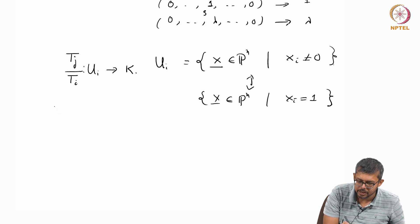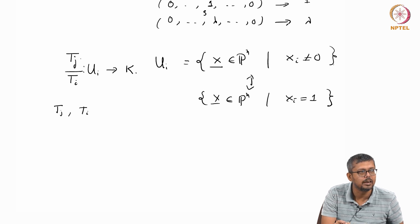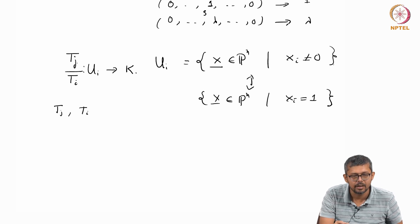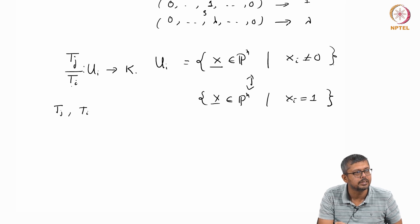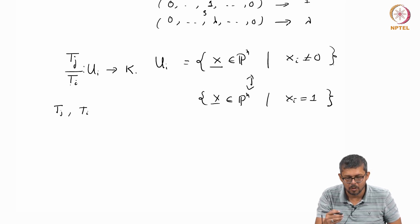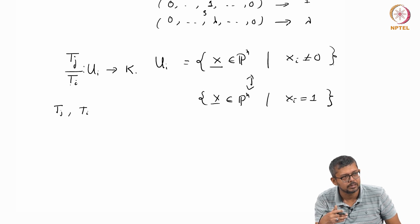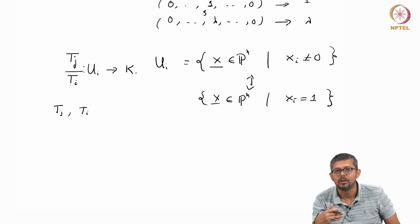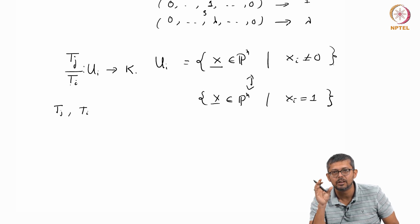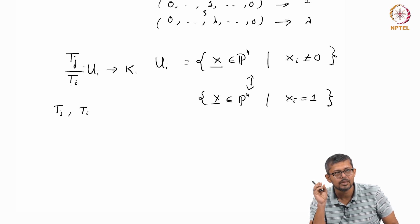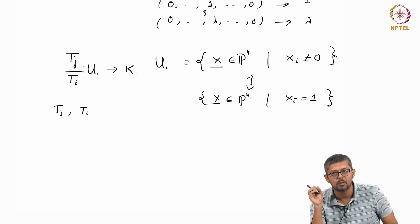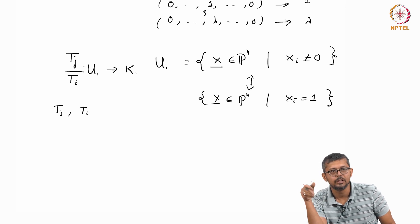But you see that t_j/t_i, this is a homogeneous, t_j is a homogeneous... we will see both t_j and t_i, they are homogeneous. They are just monomials here, linear monomials. And the degree of t_j and degree of t_i's, they are same. So what we will see that we will allow functions of this form, that when I define a regular function on P^n, these are, they look like f/g, where f and g are homogeneous polynomial and degree of f and degree of g should be same. So that is how we define regular function.